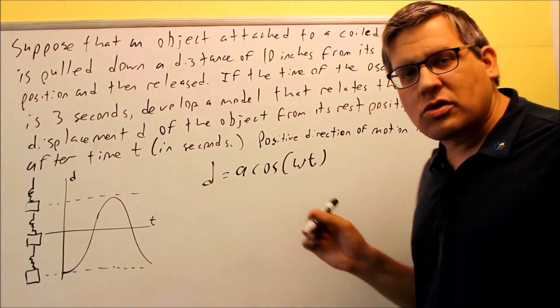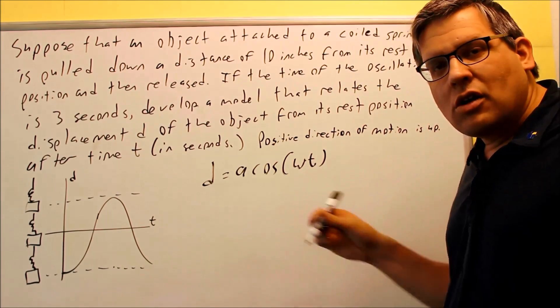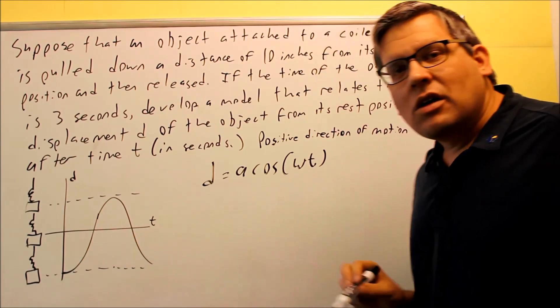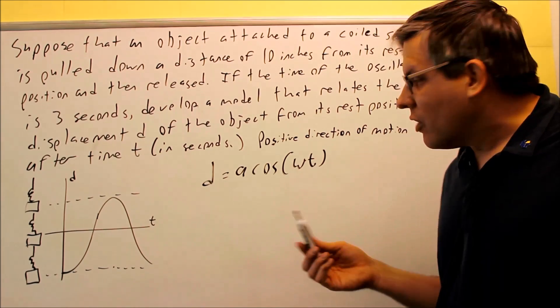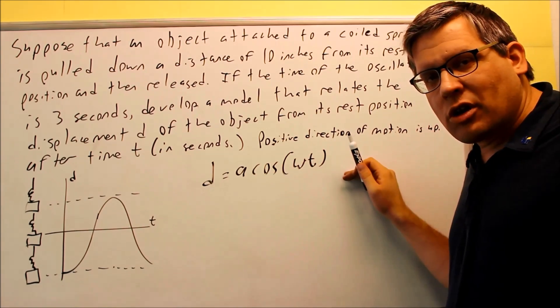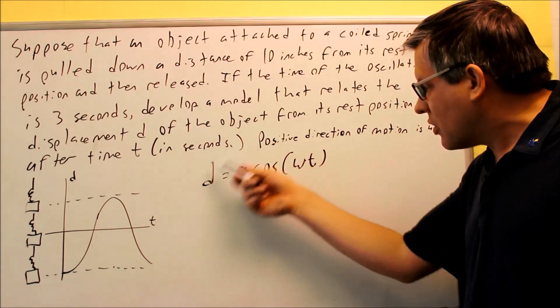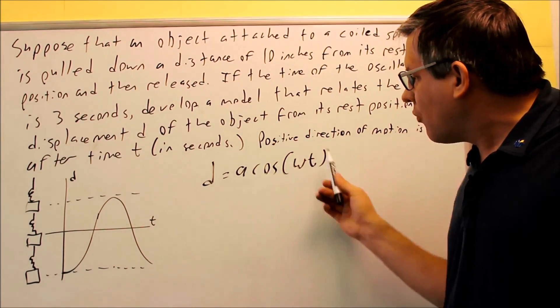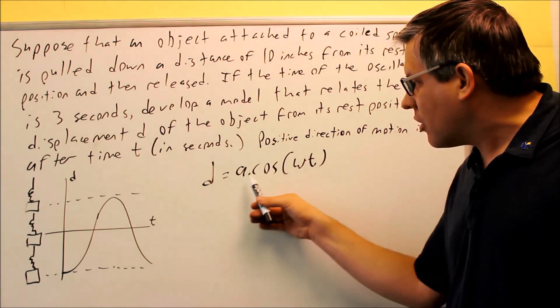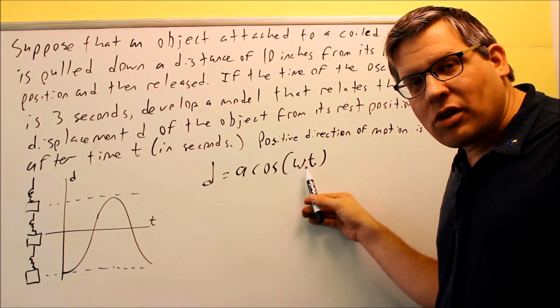I'm purposely choosing a cosine one because cosine graphs will always start at the amplitude. If they want you to start at the rest position, that means we'd be using a sine graph. But this particular one, we want to start with a cosine. Now in order to get this, this is the base formula that we'll use to get the model, but we have two different variables we have to figure out. We have to figure out the a and we have to figure out the omega.